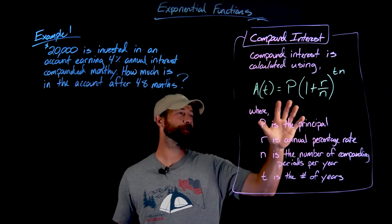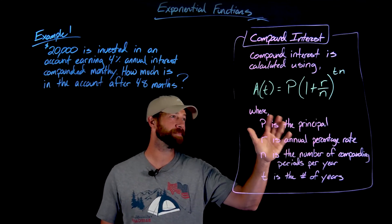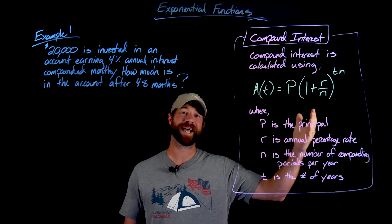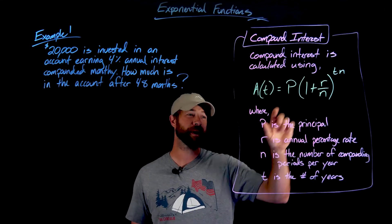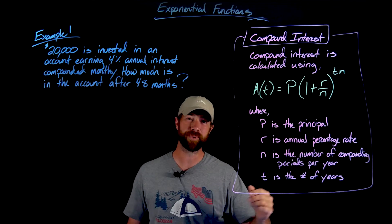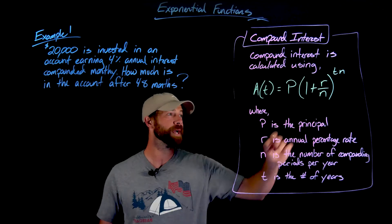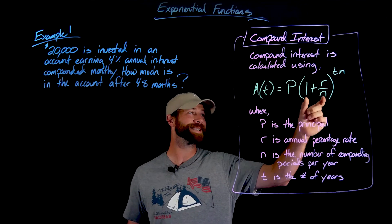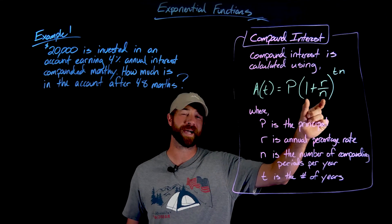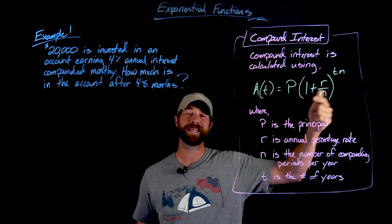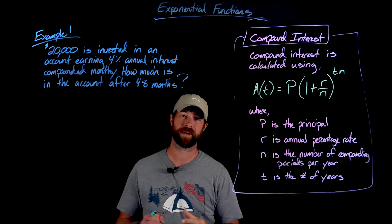And then also this formula can seem a little bit intimidating, but just remember this is exactly the same as A, B to the X we were just talking about. We have our initial amount. We call it P because it's called the principal. It's just the initial amount in the account whenever time is zero. And then this part right here is simply calculating the growth factor. What this again is doing is taking your annual rate and dividing it by however many times you're going to compound per year.